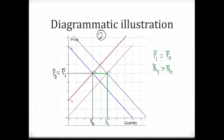Let's look at another scenario. In this scenario, as you can see right away, the relative strength of the demand factors and the supply factors are the same. Observe that the horizontal shift in the two curves is the same. The initial demand curve and initial supply curve intersect at the point equilibrium sub 0, with initial equilibrium price P0 and initial equilibrium quantity Q0.